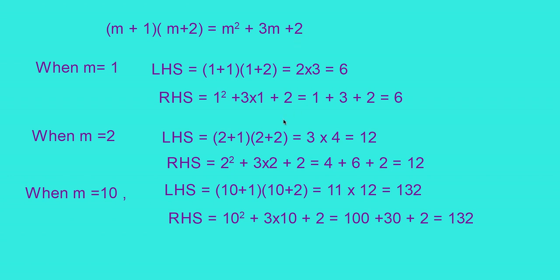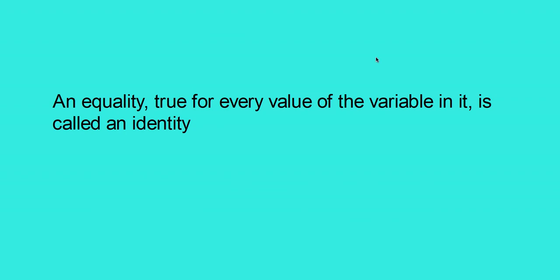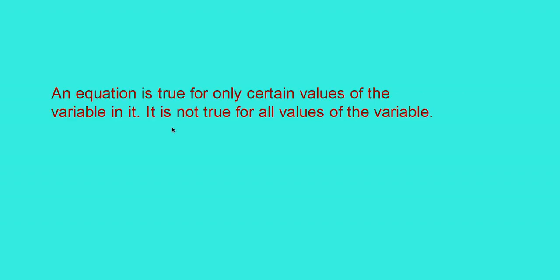That means for any value of the variable m, both LHS and RHS will be equal. Such an equality we can call an identity. That is, an equality true for every value of the variable in it is called an identity. An equation, on the other hand, is true for only certain values of the variable — it is not true for all values.